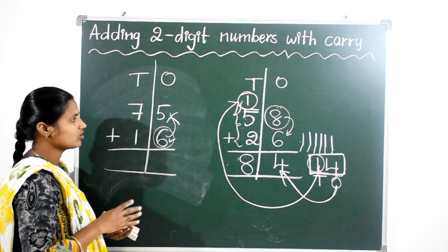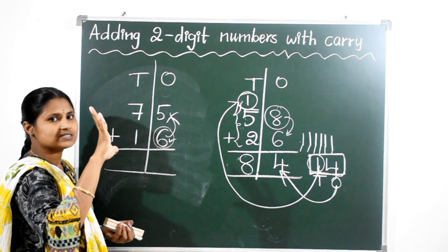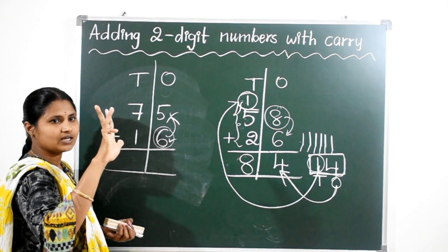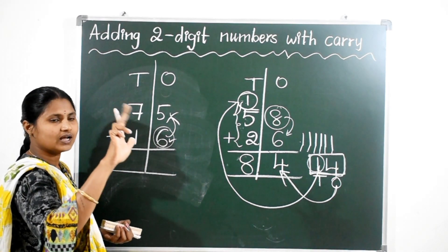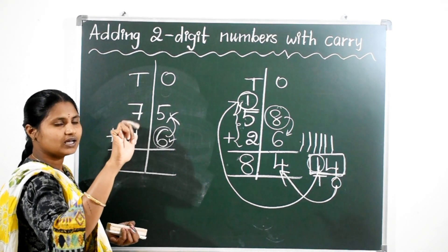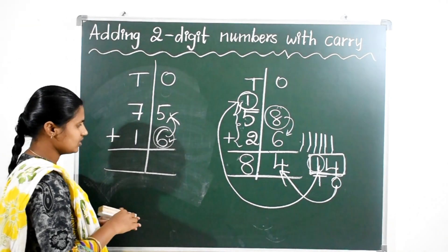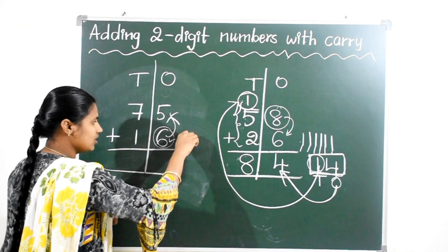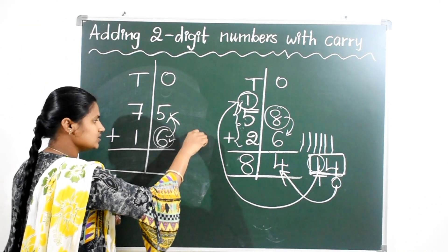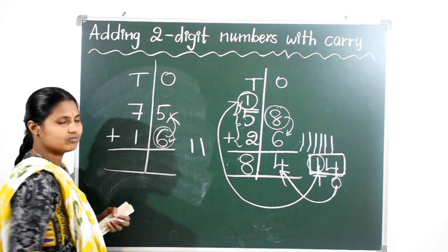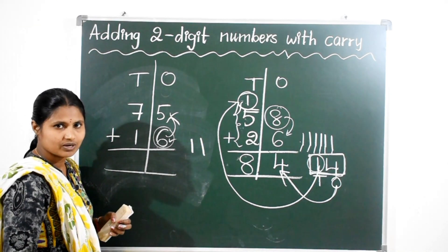6 after 5 more numbers: 7, 8, 9, 10, 11. Here we got a 2-digit number — 11.